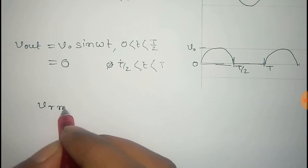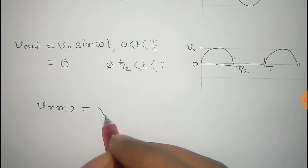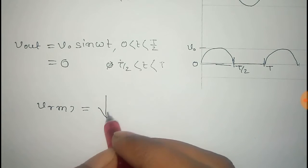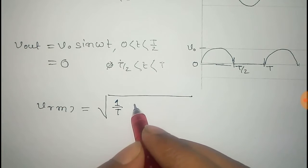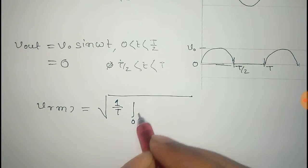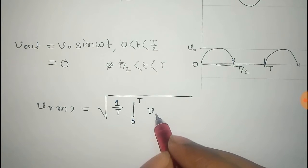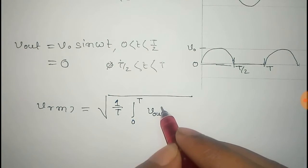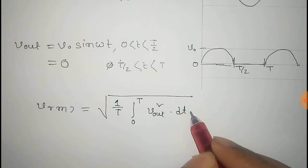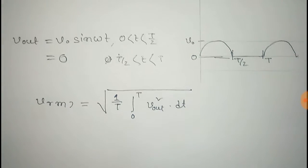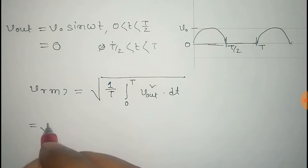The RMS voltage V_RMS is given by the square root of (1/T) times the integral from 0 to T of V_out squared dt. Now we have to put the value of V_out for different ranges.